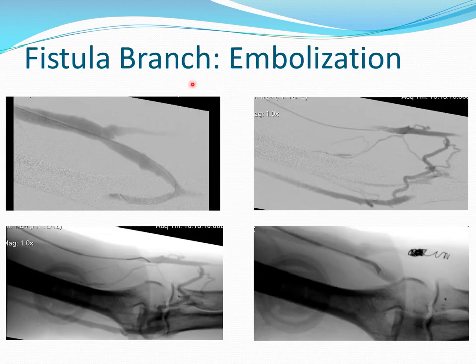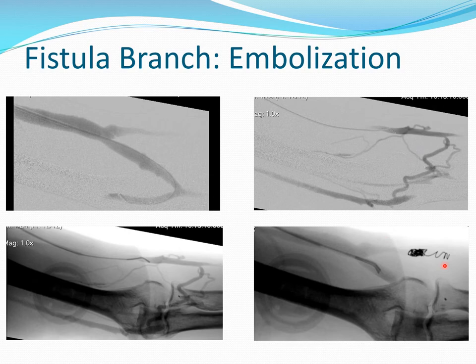For fistula branches — when there are branches like this, a surgeon can ligate them, or an interventional radiologist can place a catheter selectively into these veins and release coils to embolize them.